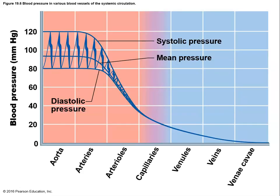Systemic blood pressure is often measured at the arm. We talk about two numbers: systolic pressure — the pressure when the heart is actively pumping — and diastolic pressure — which occurs when the heart is relaxing and refilling. These represent the highest and lowest blood pressures in that vessel. The farther from the heart, the lower blood pressure becomes and the closer systolic and diastolic converge.